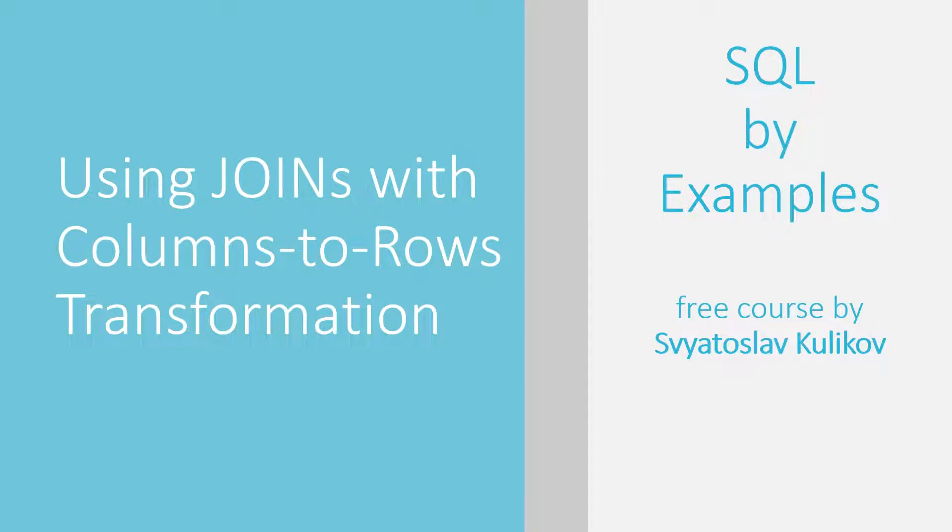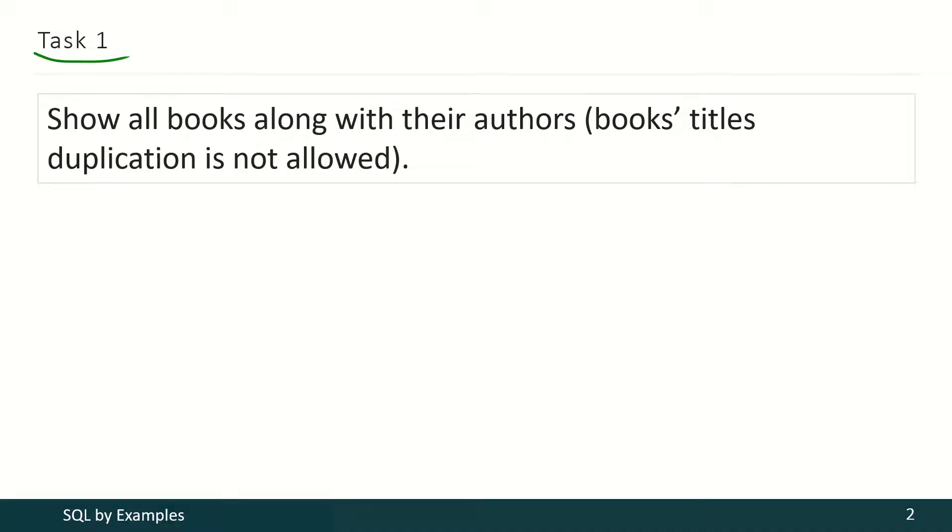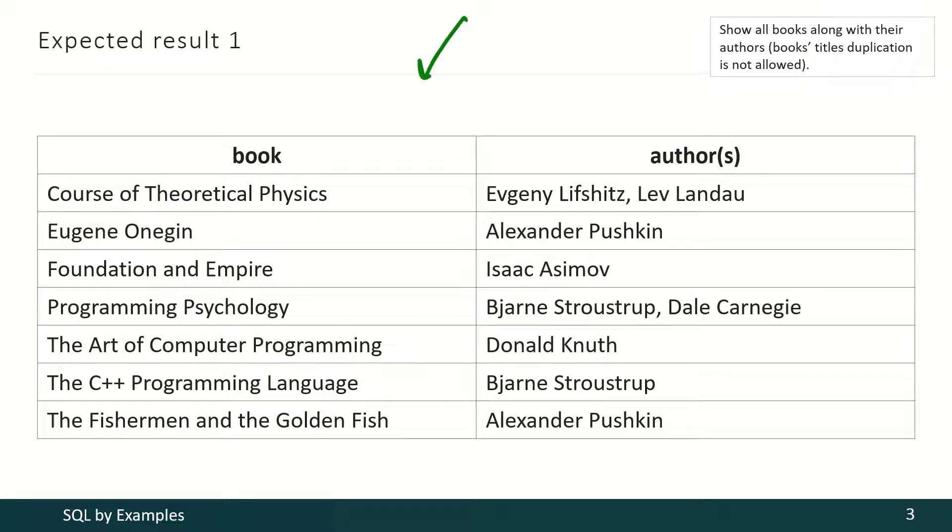In this video we shall discuss how to use join operator with columns to rows transformation. In the first task we have to show all books along with their authors, but books titles duplication is not allowed here.